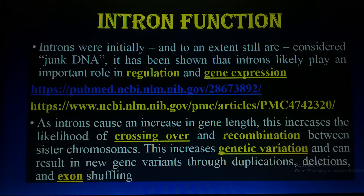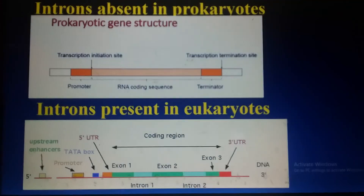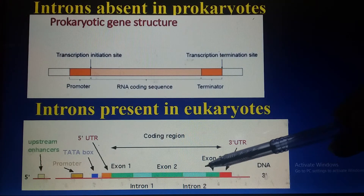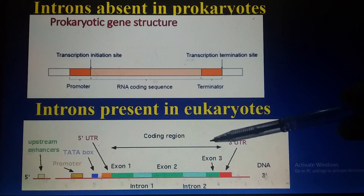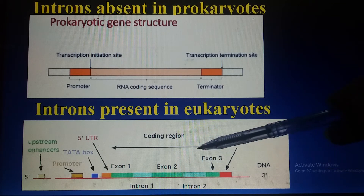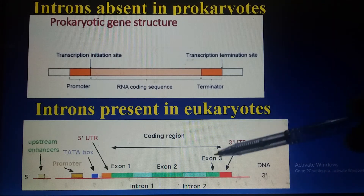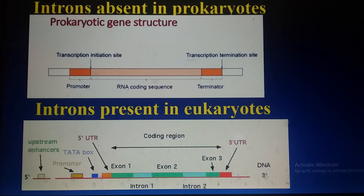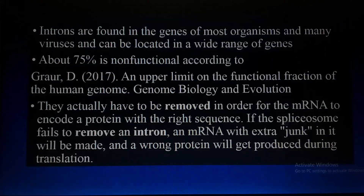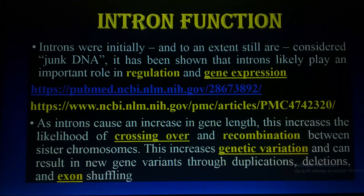Scientists believe that introns, which are non-coding sequences present between exons, increase the frequency of genetic recombination and assist crossing over — genes cross between homologous chromosomes during crossing over — and are responsible for genetic variation.